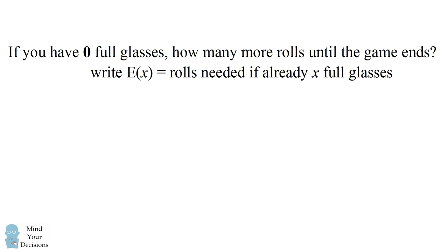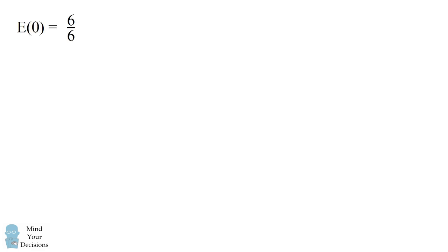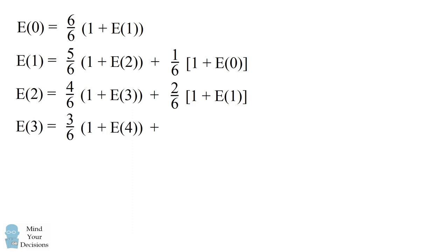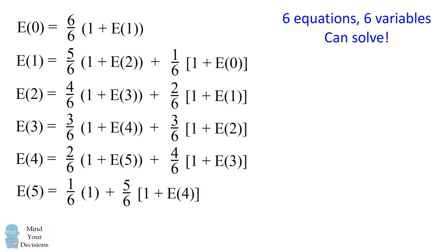The state of 0 full glasses is where the game begins. At this state, there's a 6/6 chance we roll one of the empty glasses, so it takes one turn to reach 1 full glass. We now have 6 equations with 6 variables — e(0) through e(5). When you have a linear system of n equations and n variables, you can uniquely solve for all of these variables.